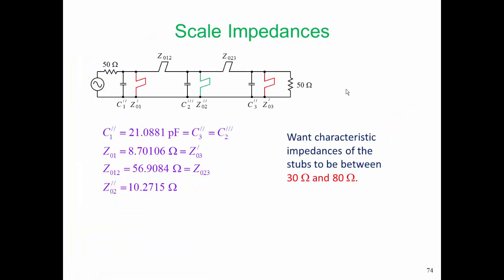So let's see what we're going to do here. We have three shunt stubs. The Z01 and Z03 stubs have the same characteristic impedance, Z02 has a different one, and we want these characteristic impedances to be between 30 ohms and 80 ohms.